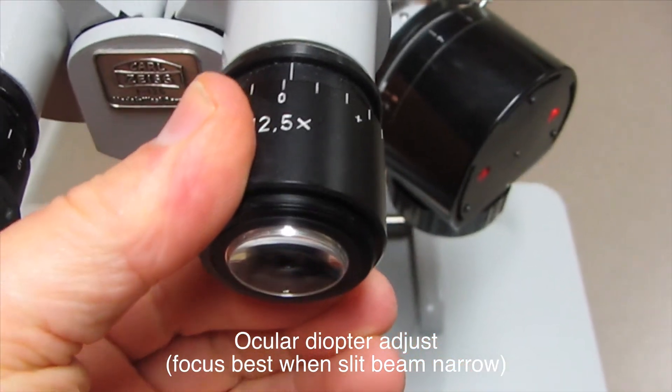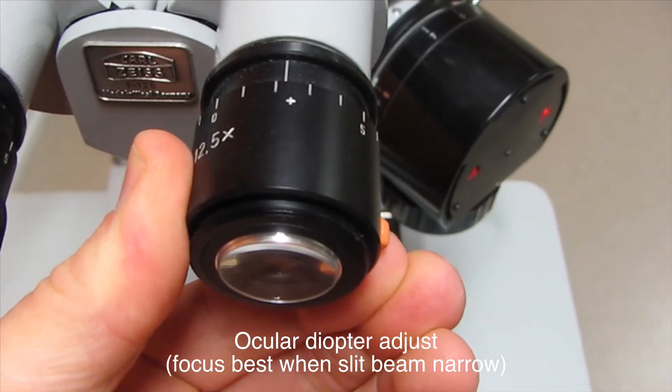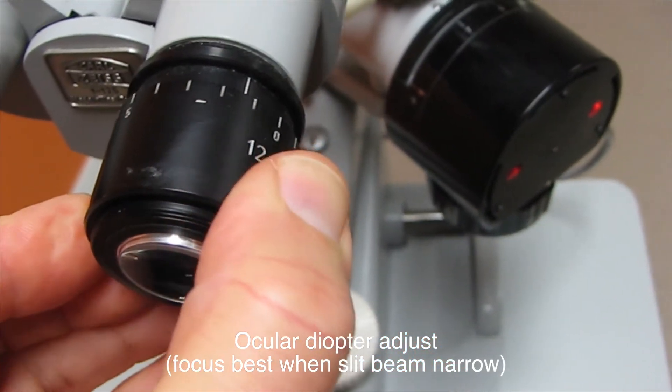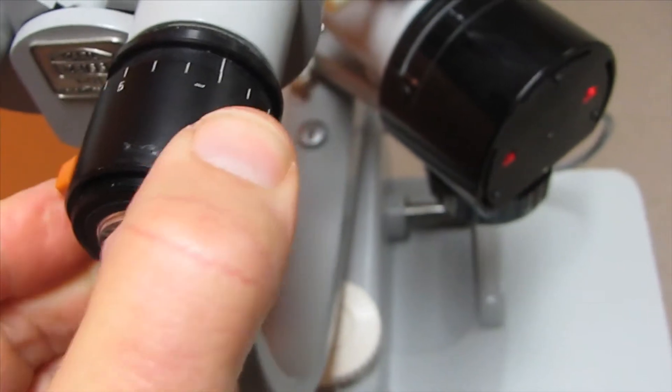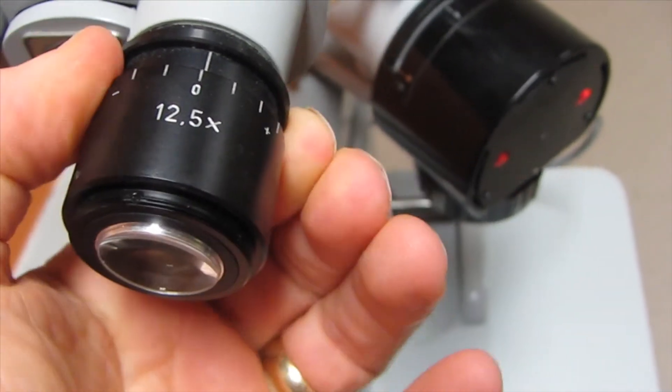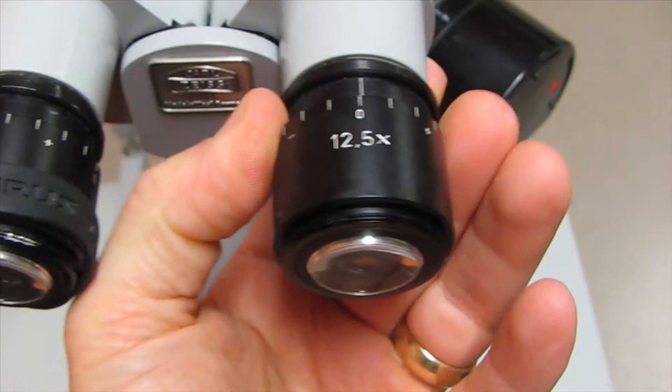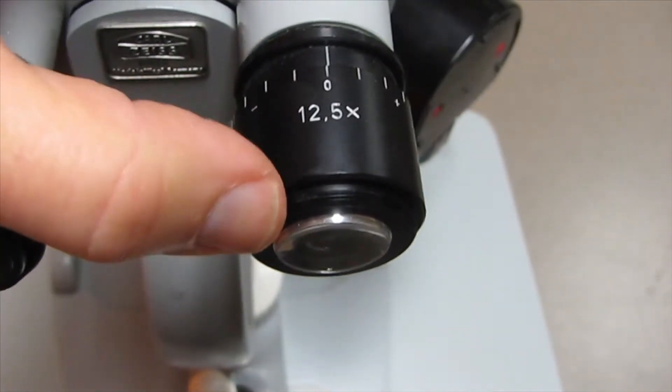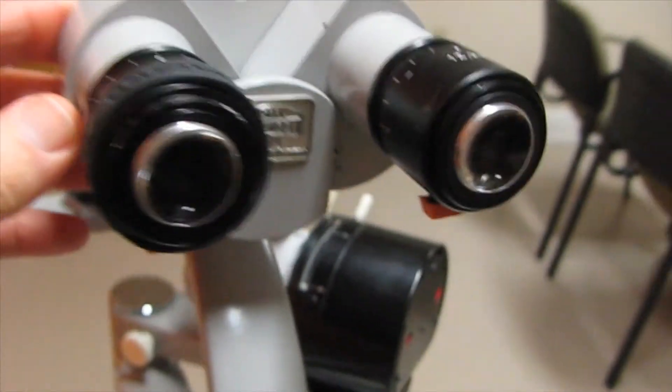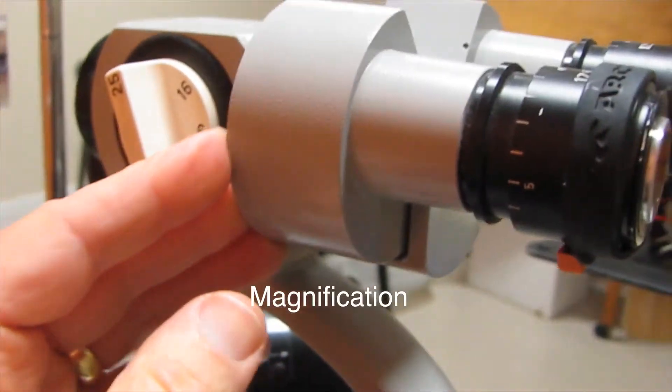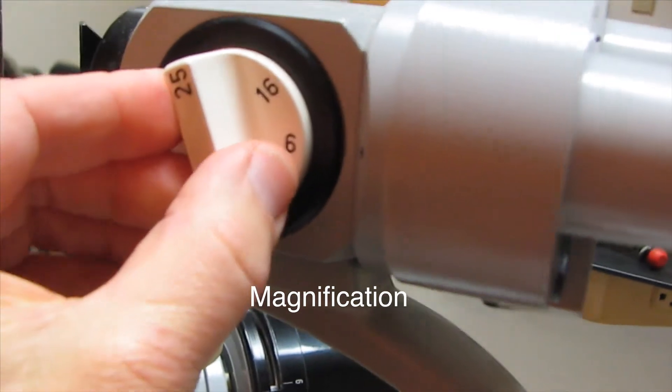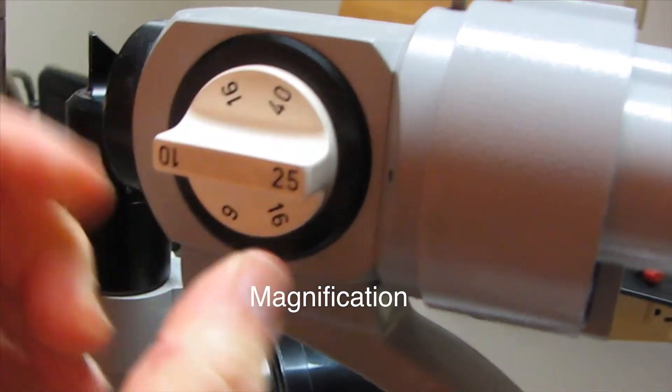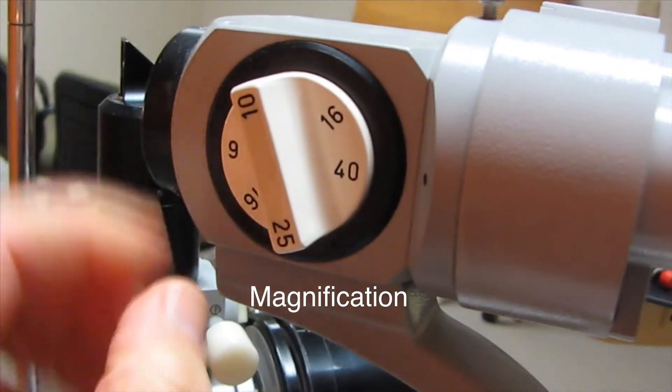You can add plus or minus if you're near-sighted or far-sighted, but most likely you'll want to keep the microscope at zero on both sides and keep it slid in well. The oculars have this focus on a Zeiss slit lamp up to 40x.